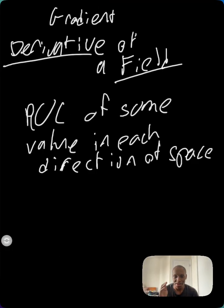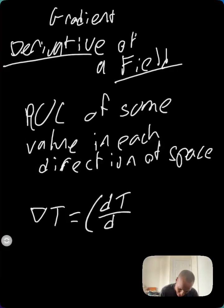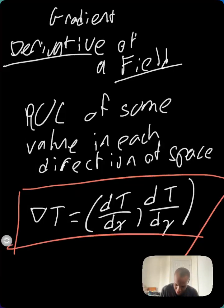So the gradient is a vector. It's denoted by the upside down triangle. So gradient of T, gradient of temperature, is equal to some vector. And it is equal to the derivative of temperature in the X direction and derivative of temperature in the Y direction. That is your value, your definition of a gradient. I hope that makes sense.